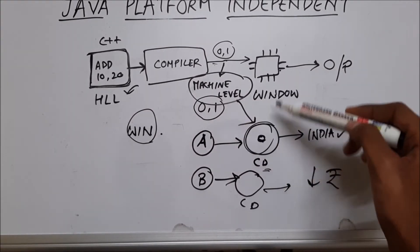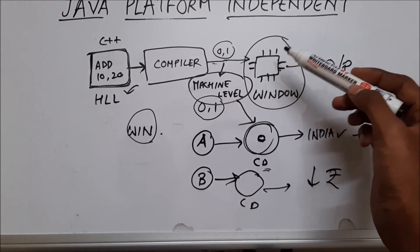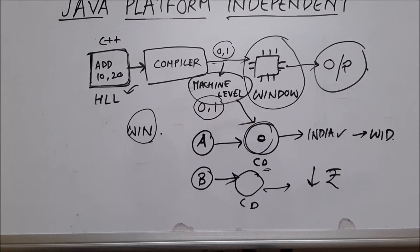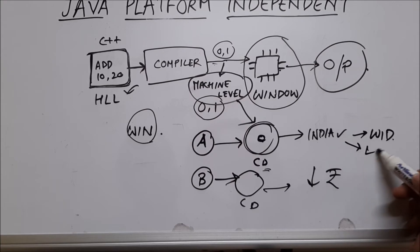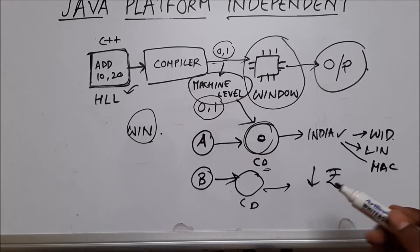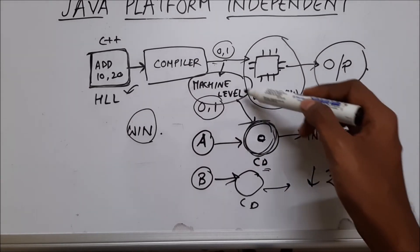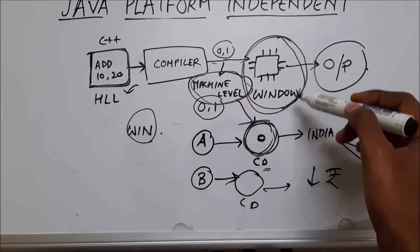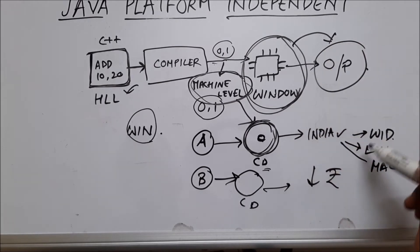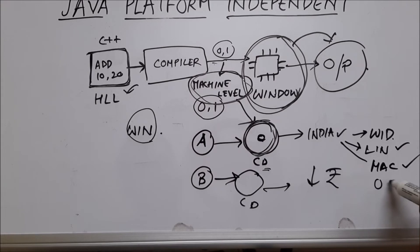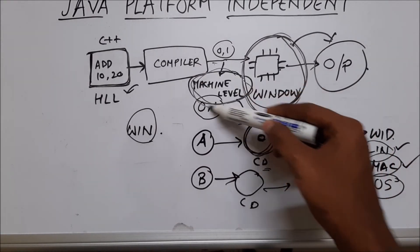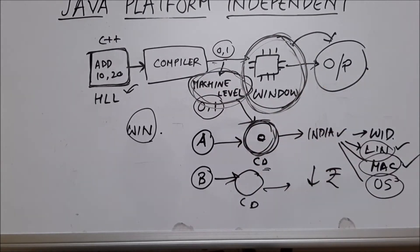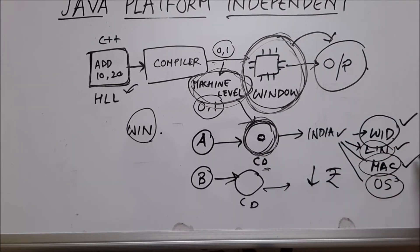Now let's say people have advanced and now have Windows, Linux, and Mac OS. If I give them this CD containing machine level language and they run it on a Windows platform, it gives output immediately. But for Linux and Mac OS, the platform will not be able to identify this machine level language because it was compiled on a Windows platform. So the CD is only usable by Windows users, meaning I am losing potential customers.